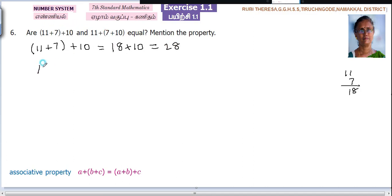Next one you take. 11 plus 7 plus 10. While you are reading the number, you read it together. What is given inside the bracket? 7 plus 10. 11 plus 7 plus 10. So this you keep as it is. 11 plus what is given inside the bracket you have to add it. 10 plus 7 is 17.